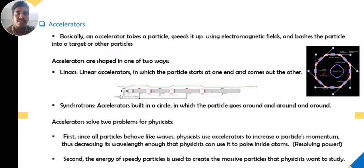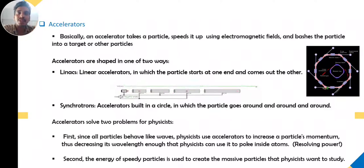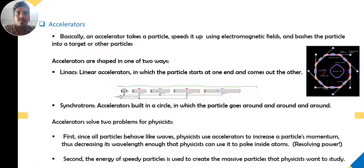A high-energy particle should be incident on a particular object or target, causing that target to emit many particles. From that, we can understand the properties of the many particles emitted. Even the Big Bang theory tries to illustrate this idea — if you give enough energy to a particle, you can understand much of the physics behind the universe. That is the basic idea behind the Large Hadron Collider.